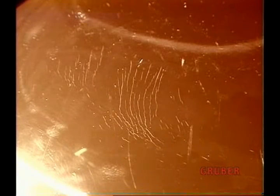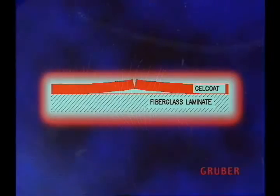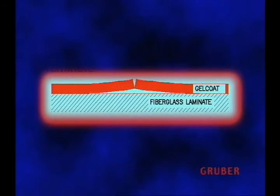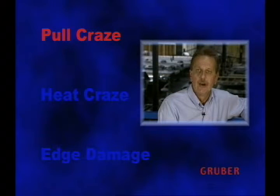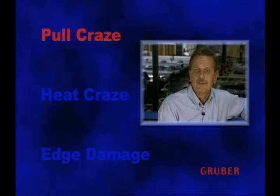It is important to know that when these lines become visible, the damage may have occurred five to ten pulls earlier. This graphic shows how the gel coat delaminates and peaks at the crack. The longer this mold is used, the more pronounced the crack will become. Pull craze is the most common type of damage you'll find in your shop.